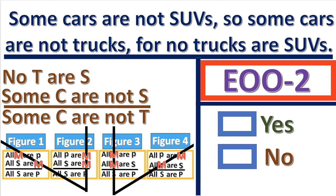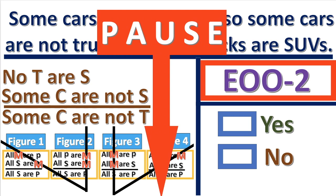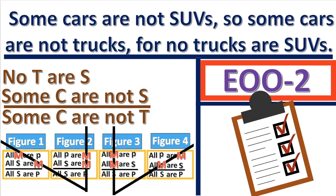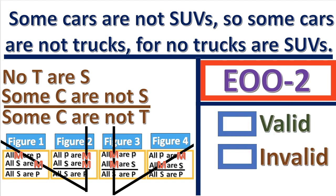Is the form of the syllogism, which is E-O-O-2, valid or not? Check the list in the description box below for a list of valid forms. The form is not on either list, and since it's not on either list, it is invalid.